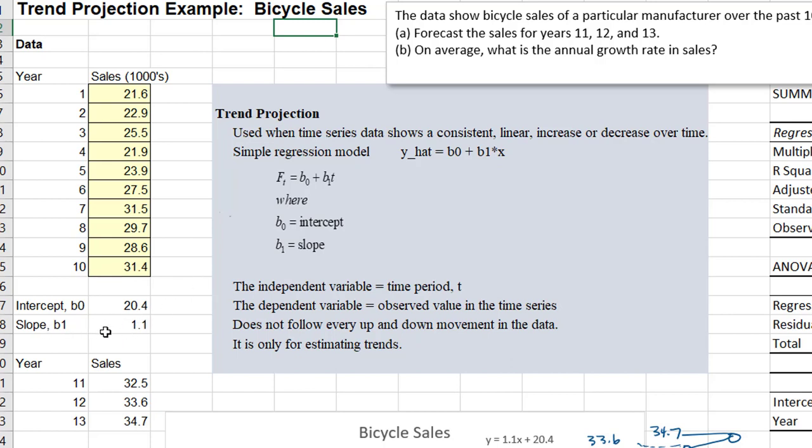So remember the slope here, 1.1, represents the increase in the y per unit increase in x. Or in this case, the x is the year. And so every year, the expected increase is 1.1. So that is, we expect the sales to increase by 1.1 each year on the average.